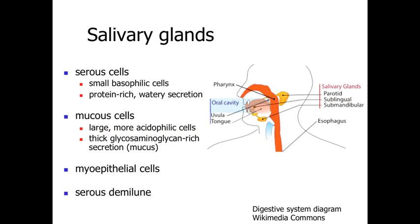If we take a look at the cells associated with the salivary glands, like other secretory regions we've seen within the body, we're going to have either serous cells — serous cells are small basophilic cells involved with producing a protein-rich secretion, giving a basophilic staining appearance because of the rough endoplasmic reticulum — or mucus-secreting cells, which are larger cells with an eosinophilic or paler staining appearance, producing mucus as an example of a thick glycosaminoglycan-rich secretion. We may also have a few myoepithelial cells, and structures with a mixture of both serous and mucus cells called a serous demilune.